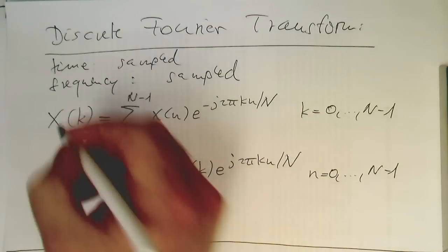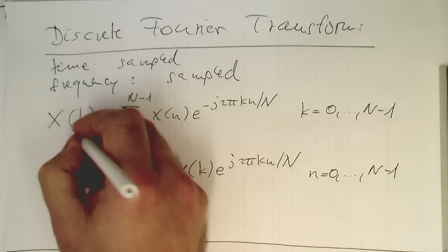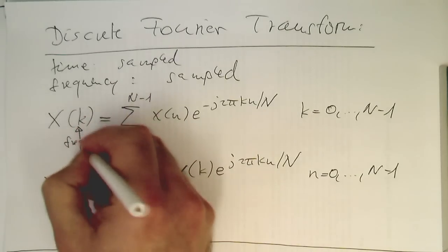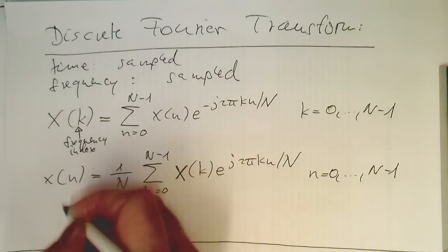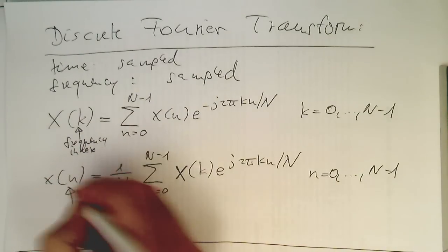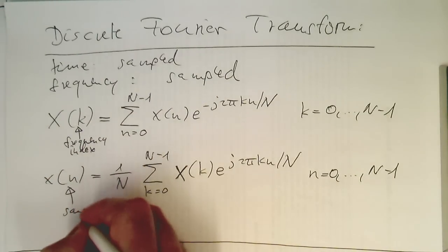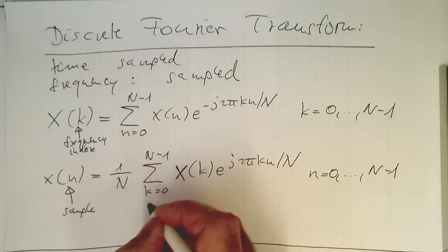So k is a frequency index. And this is here our sample index, our sample number.